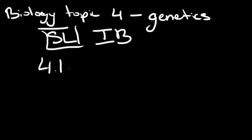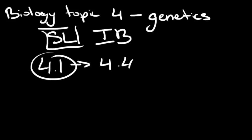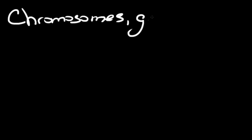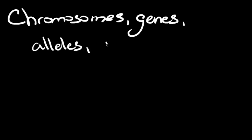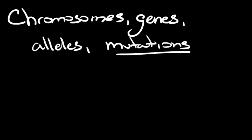Topic 4 goes from 4.1 to 4.4, and we're going to start with 4.1. So, 4.1 covers chromosomes, genes, alleles, and mutations. I'm going to leave mutations for last, and the topic of mutations is actually going to be not in this video but in the next one, because it's generally just as long as these three put together.